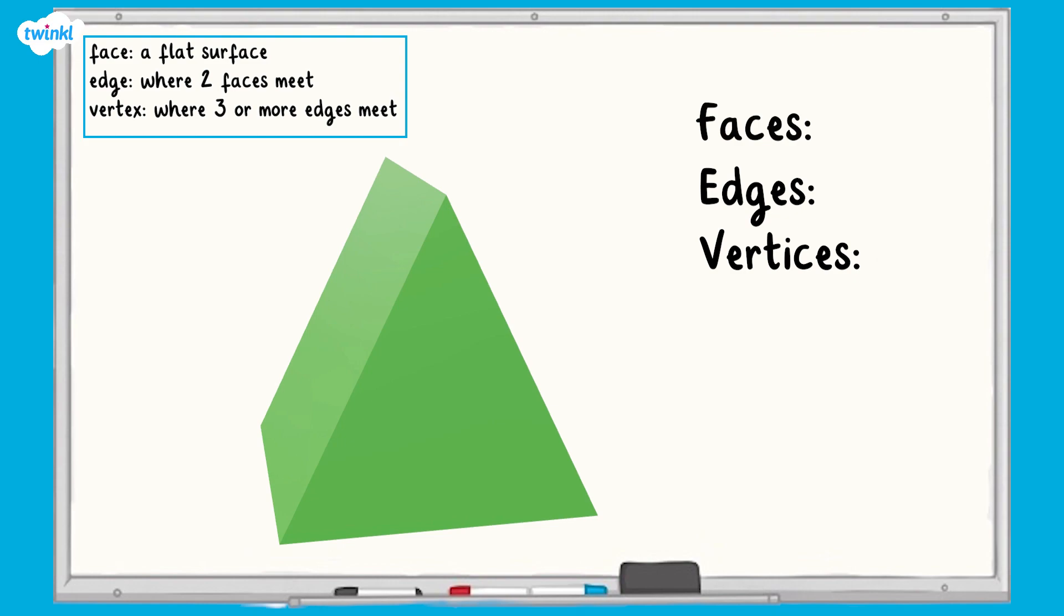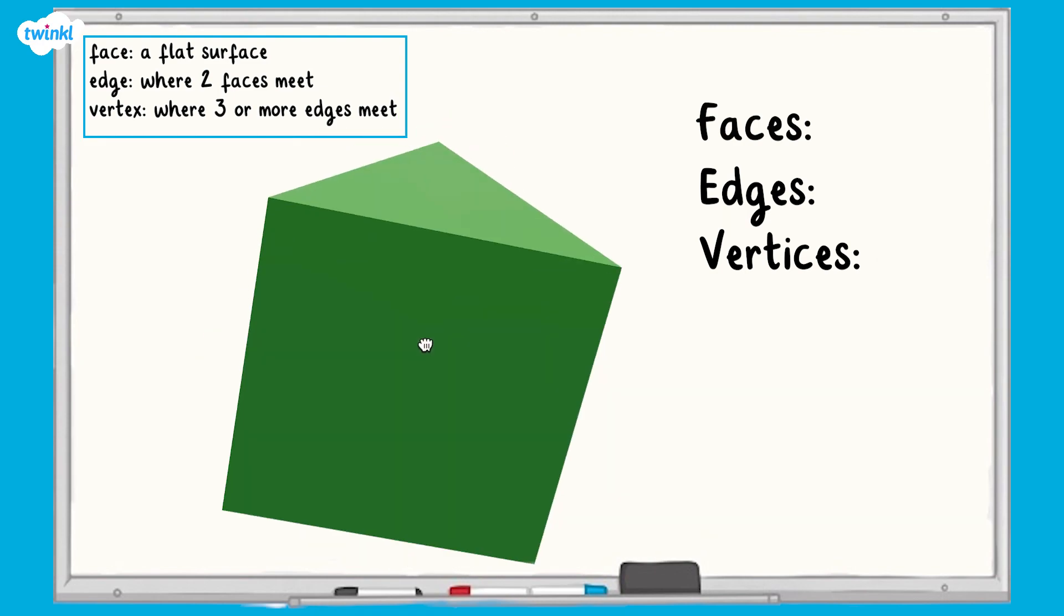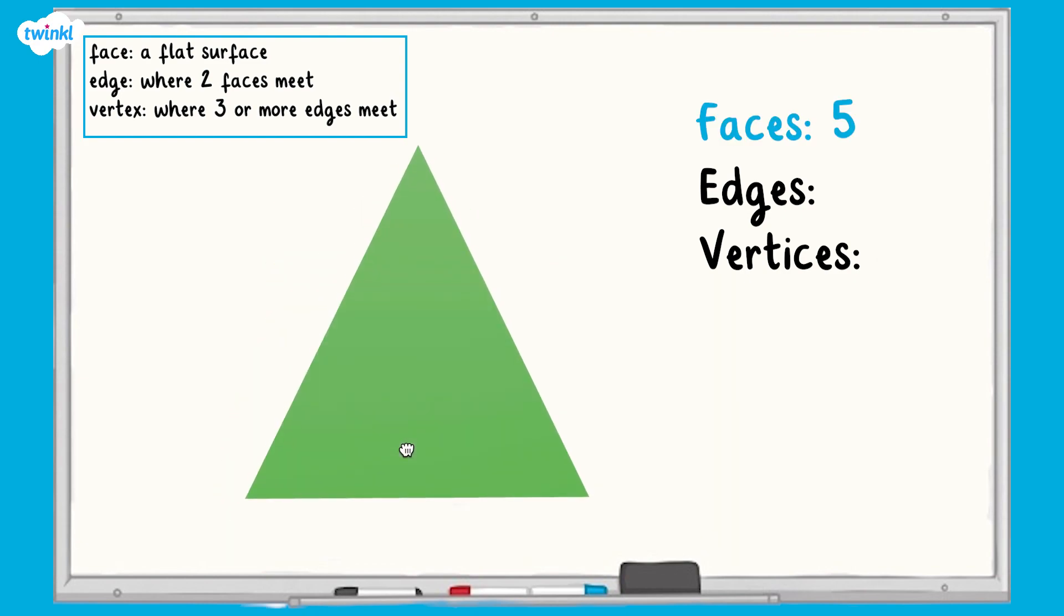Let's start by counting the faces. A prism has two opposite identical faces. In this case, two opposite triangular faces. So we can start by counting these and then count the other faces. One, two, three, four, five. There are five faces. Two triangular faces and three rectangular faces.